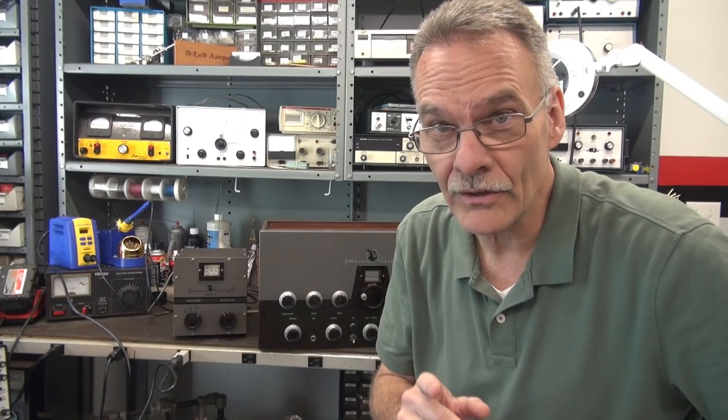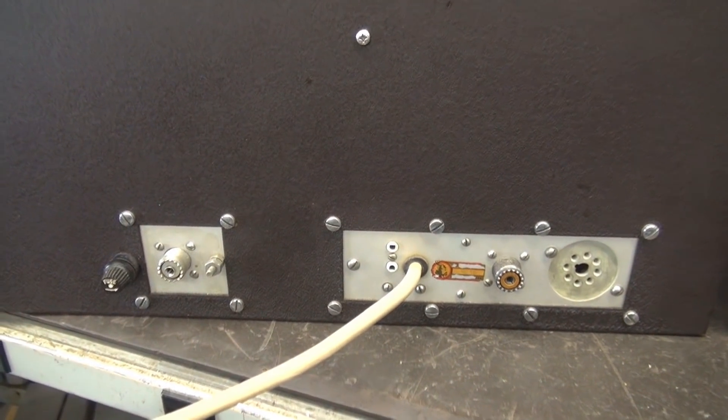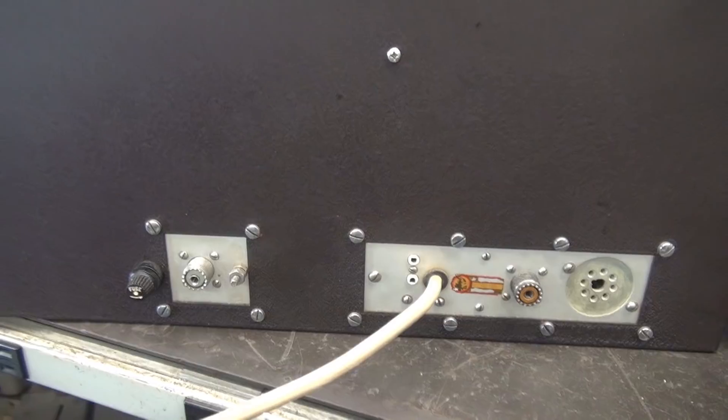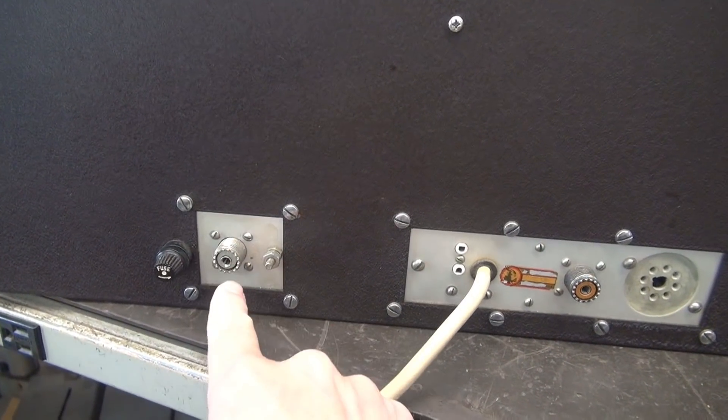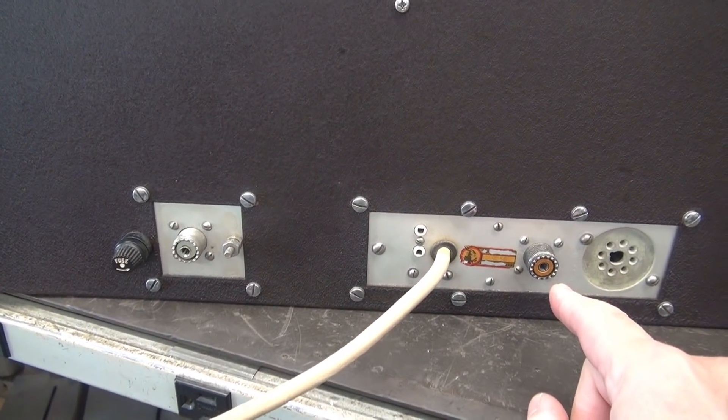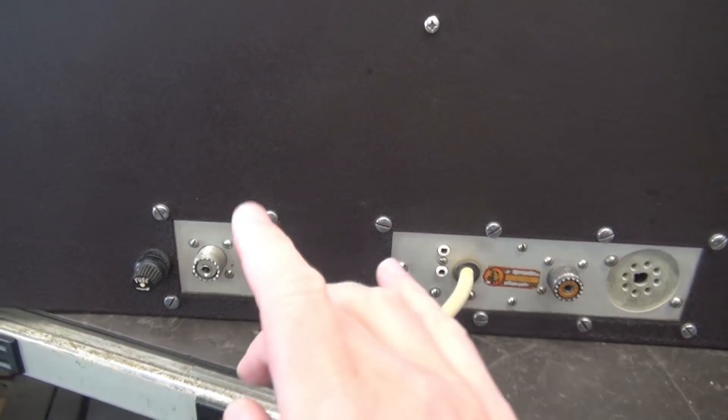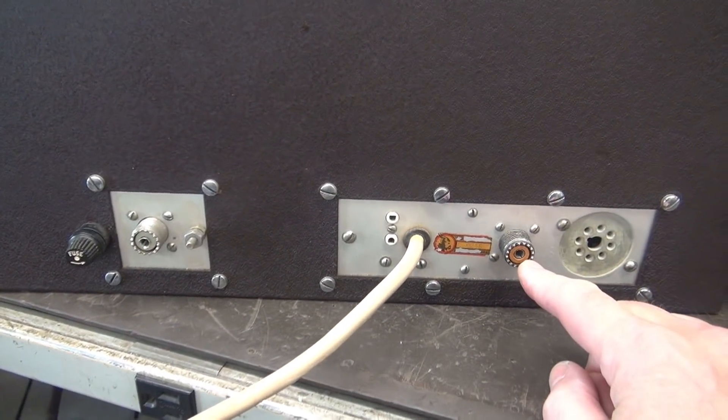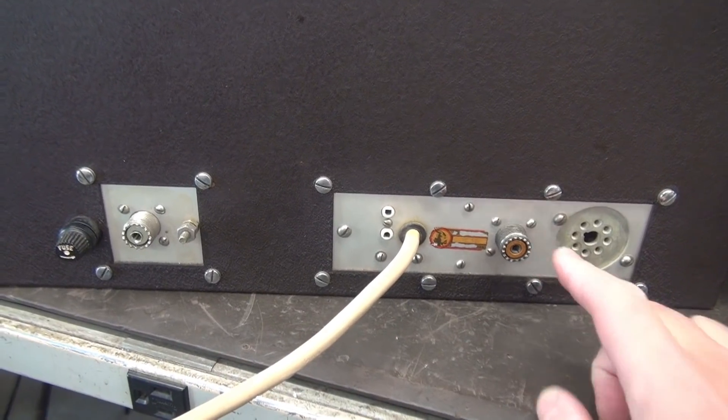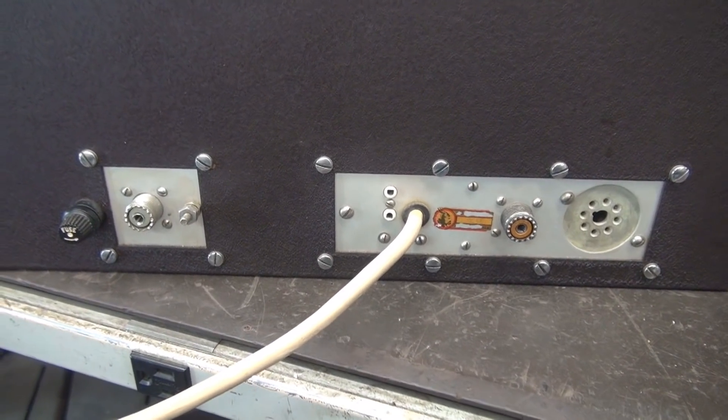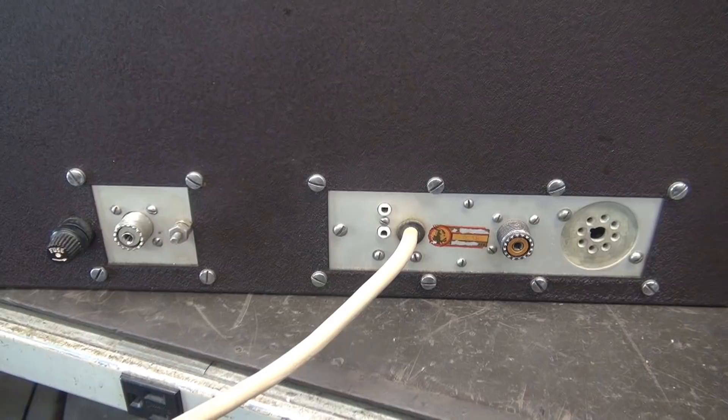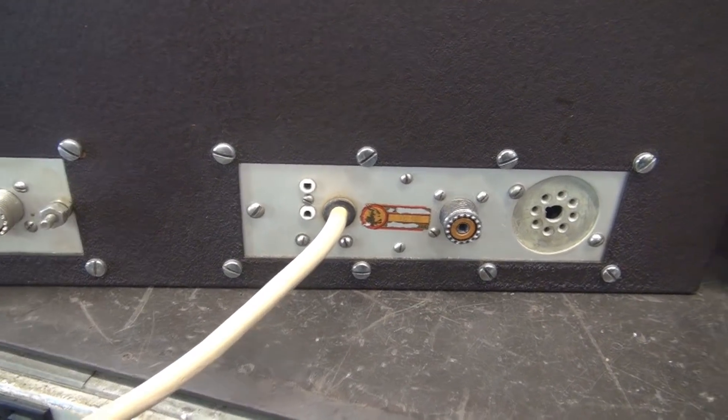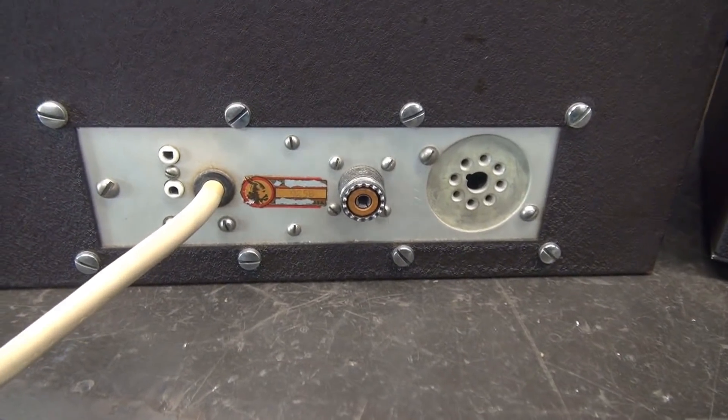Here we are, backside of the Johnson Viking 2. You can notice that there are two SO-239 connectors. This one is your RF output, this one is the VFO input. You got to be very careful that you don't reverse those connectors.